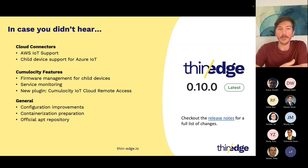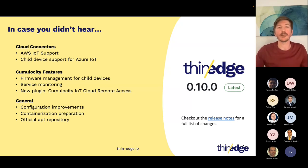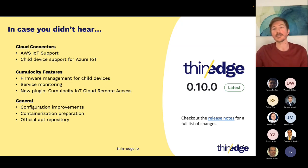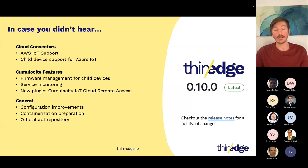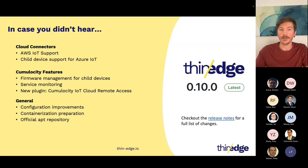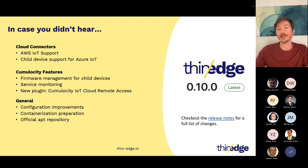As we develop the project, we also have a lot of general improvements. We have configuration improvements where we allow configuration of external MQTT brokers, and also the upcoming containerization preparation where we are able to set all of the configuration through environment variables. We also have an official APT repository, so you can install all of the thin-edge components via a standard apt-get install.